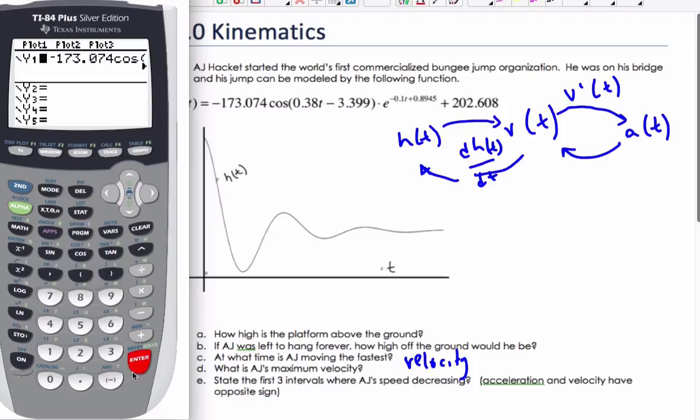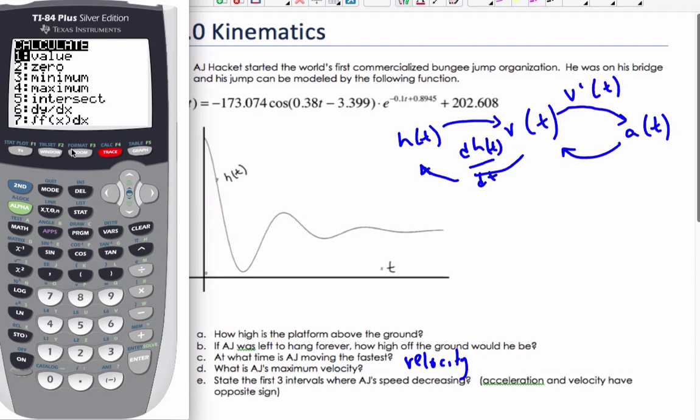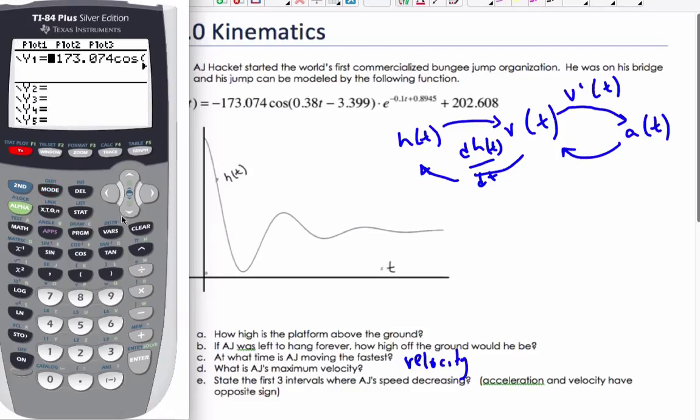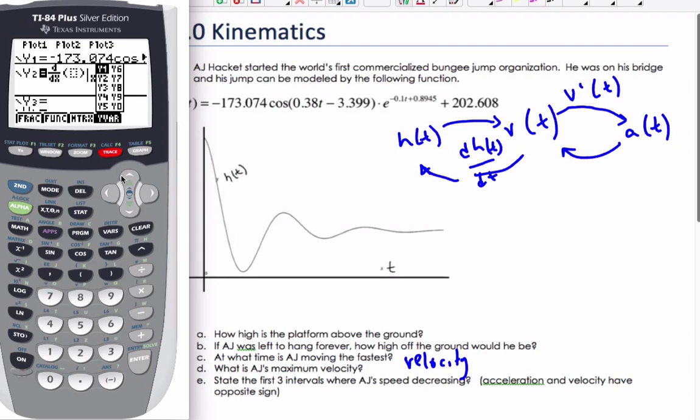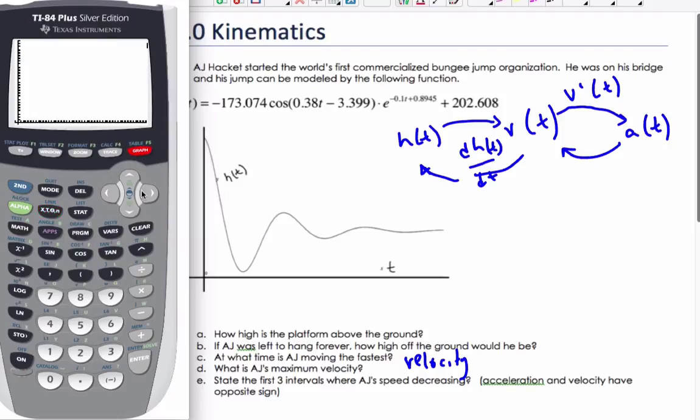So if I then go to my calculator, I'm going to turn off this function but not delete it. I'm going to go to y equals y2. I'm going to go to math, and it's number 8, the derivative. I'm going to find the derivative with respect to x of y1. And I'm going to do it for every single x. And then I'm going to graph it. So graphs here, you can see it's hovering around here.